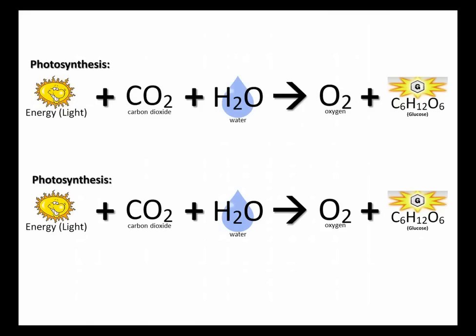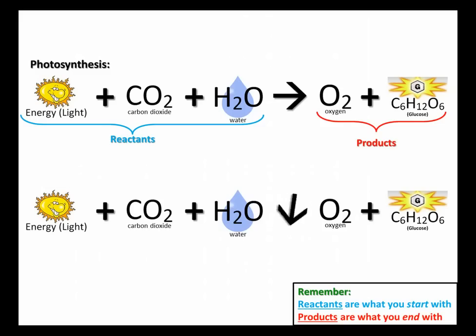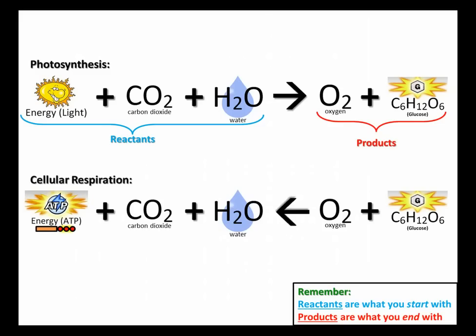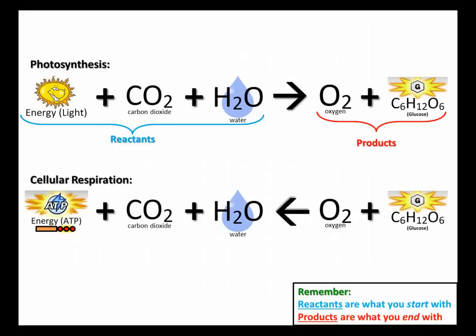Here's the equation for photosynthesis. I want to show you how it gets changed into cellular respiration. In photosynthesis, reactants are light, CO2, and water; products are oxygen and glucose. To change it to respiration, I'm switching that arrow and changing the energy from light into energy in the form of ATP. Now my reactants are glucose and oxygen, and my products are ATP, CO2, and water. To change photosynthesis into respiration, just turn that arrow and take away light and turn it into ATP. When you know one equation, you know them both.